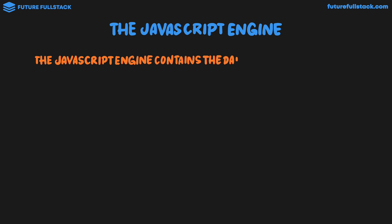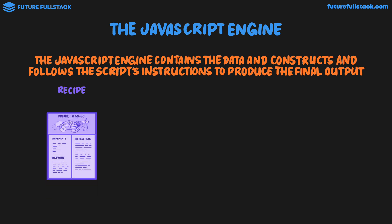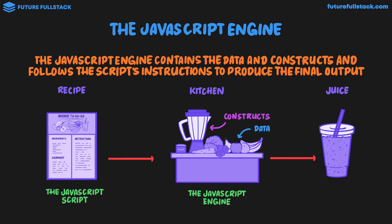The JavaScript engine contains the data and constructs and follows the script's instructions to produce the final output. Back in our juice bar, we have our recipe — equivalent to the JavaScript script — which is executed inside the kitchen, where the kitchen actually has the building blocks. The different food ingredients like bananas and apples are inside the kitchen, as well as the equipment needed like the blender. At the end of the day, the recipe is just text on a piece of paper — it just lists what we need from the kitchen in order to produce the juice. In JavaScript terms, the data and constructs live inside the JavaScript engine, just like a kitchen contains the actual ingredients and equipment. Using the recipe and kitchen, we're able to produce our juice, and in JavaScript terms, we're able to get a webpage outcome.